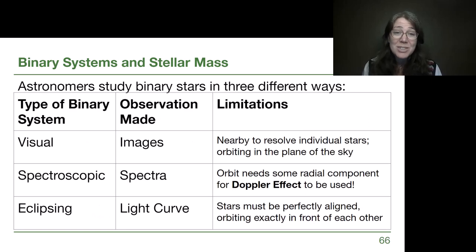So astronomers study binary stars in three different ways, and if you'd like to pause the video to write all of this down, I think that's a great idea. We're going to be able to show examples and describe each of these three types of binary systems in the upcoming slides, but I want to give you the summary ahead of time so you know what it is we're trying to apply.